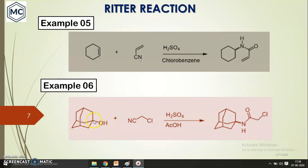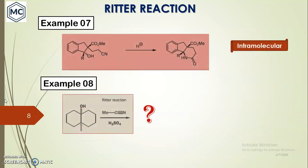Next example: a tertiary alcohol reacts with a nitrile compound in the presence of acid. First a carbocation is formed, then the nitrile reacts with this carbocation and forms an NHCO-CH₂Cl product. So far we have seen intermolecular Ritter reactions.